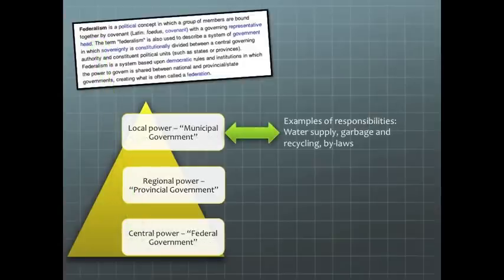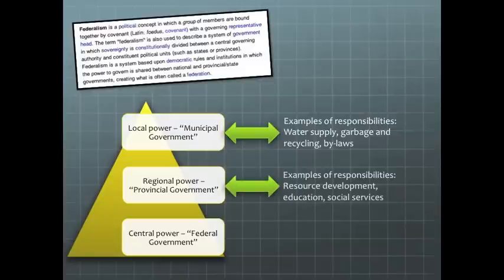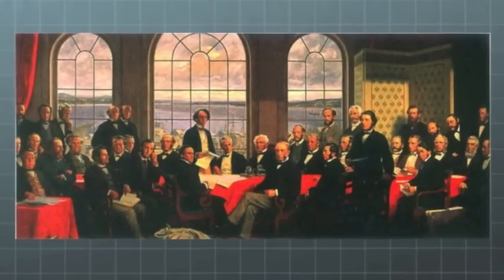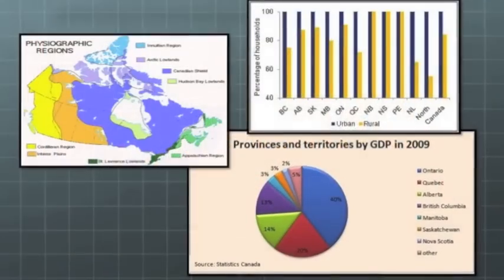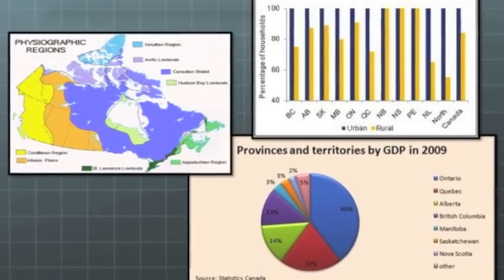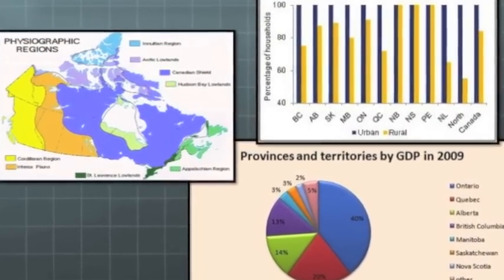Our local government is responsible for things like water distribution and garbage control. There are also municipal bylaws that deal with things like pets or noise — issues that, while important to us, don't really impact all Canadians from coast to coast. The regional or provincial government is responsible for things like resource development and education. The Fathers of Confederation knew that this level would best be able to respond to the diversity of our country.